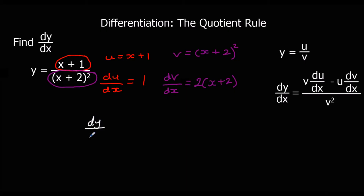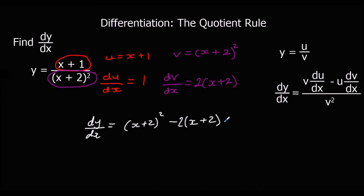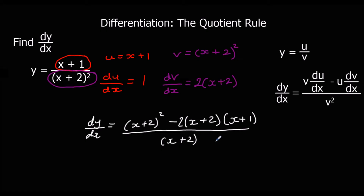Then we just substitute in to our formula. So v times du/dx is x plus 2 squared, minus u times dv/dx, which gives us 2 times x plus 2 times x plus 1. And x plus 2 squared times x plus 2 squared is x plus 2 to the power of 4. We could simplify the top line by expanding it and collecting like terms, but we'll leave it as it is.